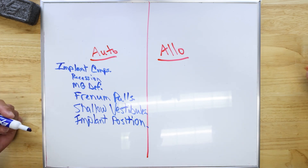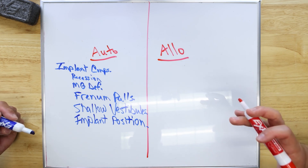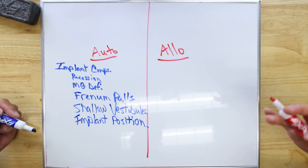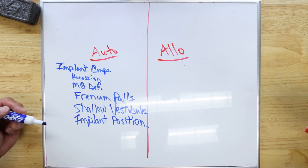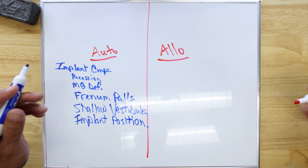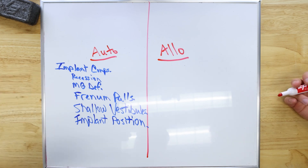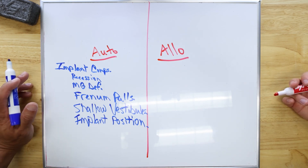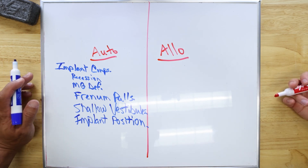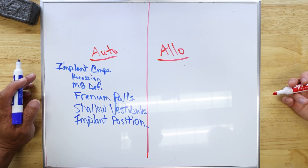That's a lot of indications. So auto is always the safest thing to use? Yeah, safest thing in our hands. By far the most predictable and probably longest lasting, too.